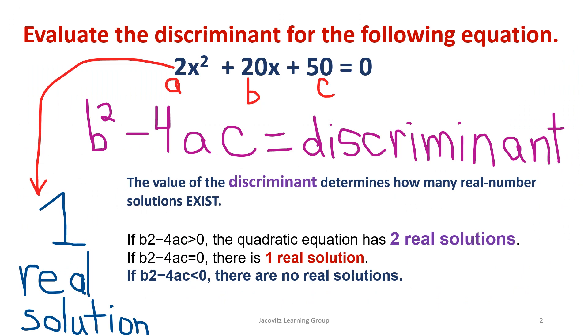This problem says evaluate the discriminant for the following equation: 2x squared plus 20x plus 50 equals zero. This is standard quadratic form. b squared minus 4ac equals the discriminant. Here are some guidelines in case someone asks you, is there going to be a real solution, how many roots does it have?